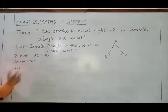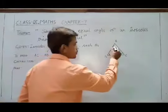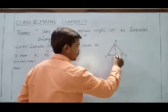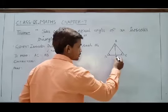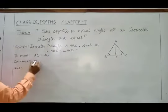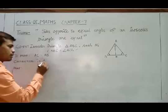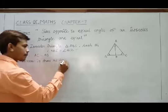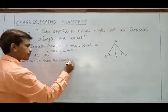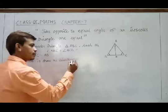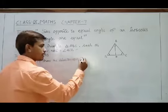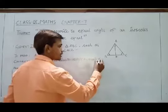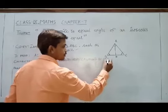For this we need to do a construction: draw the bisector of angle A as AD, which meets the opposite side BC at D. So the construction is to draw the bisector AD of angle A, which meets the opposite side BC at point D.